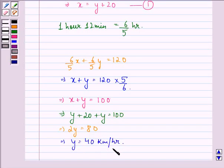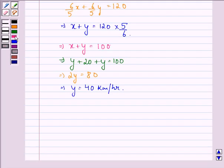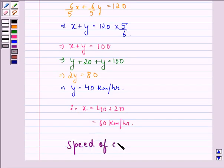Now using this value of y in first equation, we get x is equal to 40 plus 20 that is 60 km per hour. Our answer to this question is that the speed of cars are 60 km per hour and 40 km per hour.